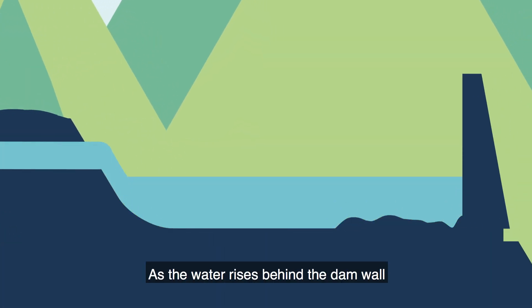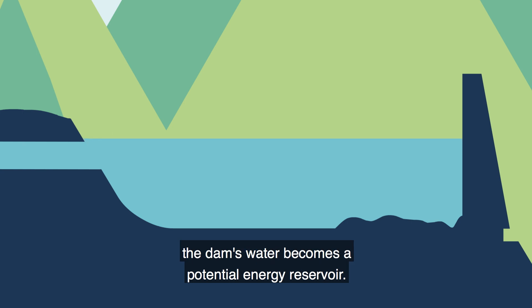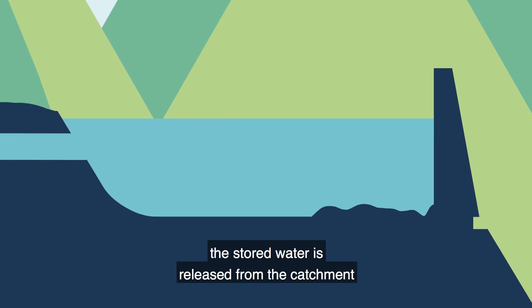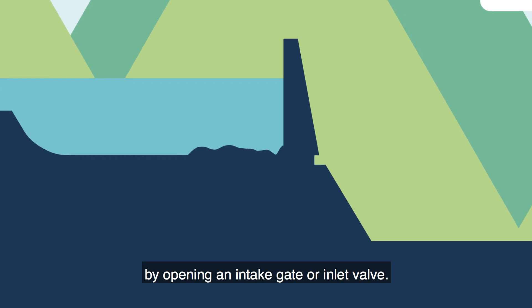As the water rises behind the dam wall, the dam's water becomes a potential energy reservoir. When the demand for electrical energy occurs, the stored water is released from the catchment by opening an intake gate or inlet valve.